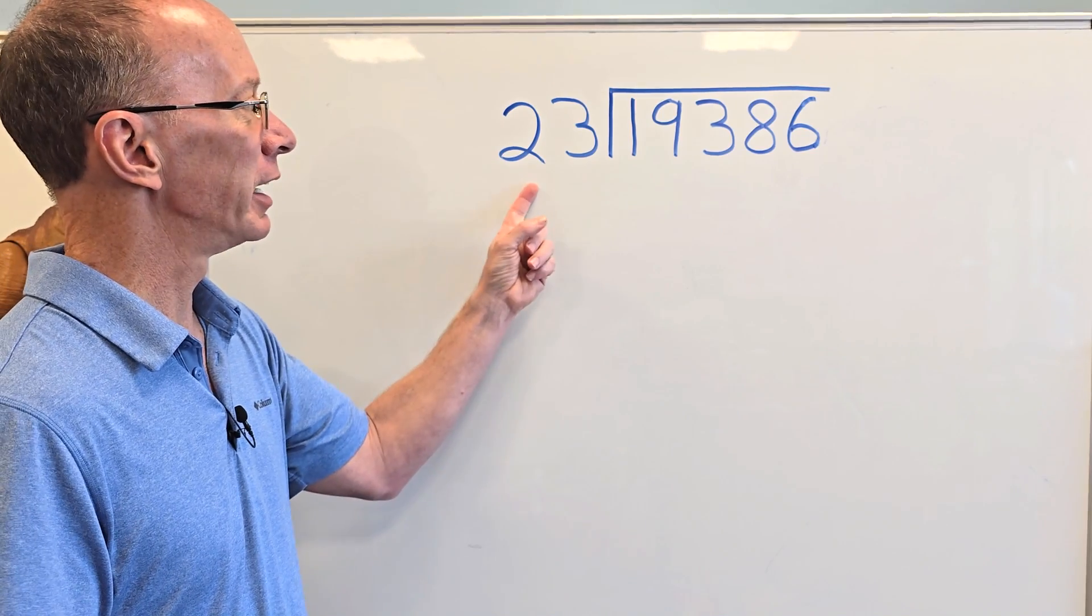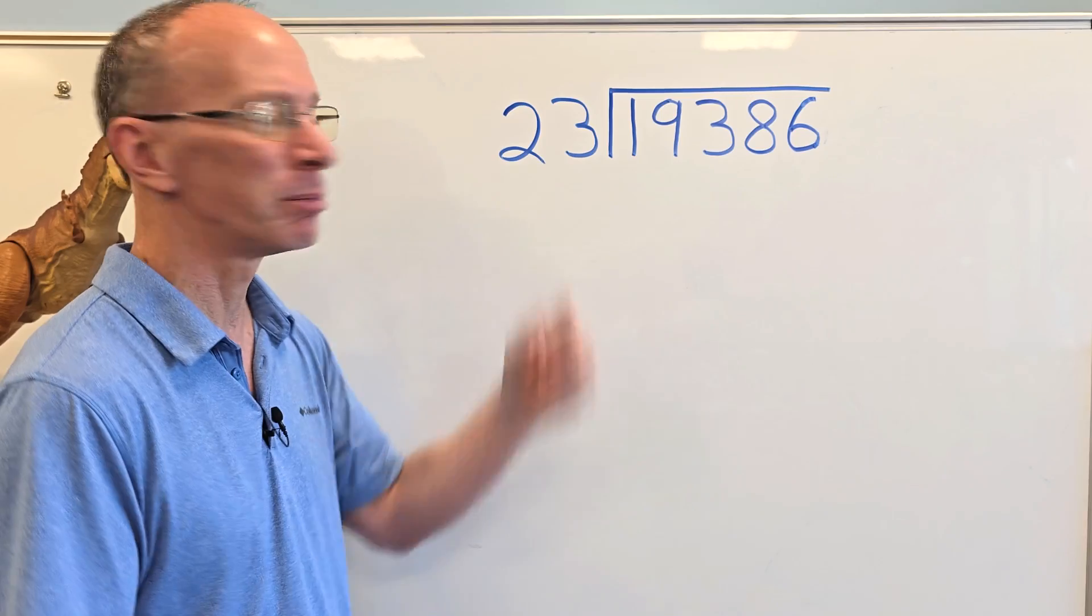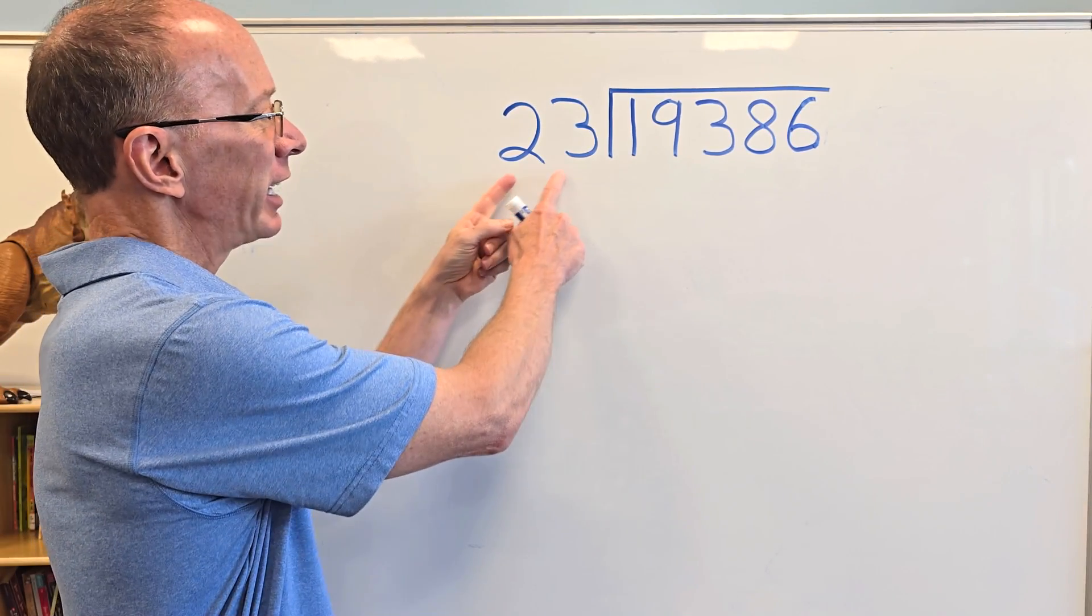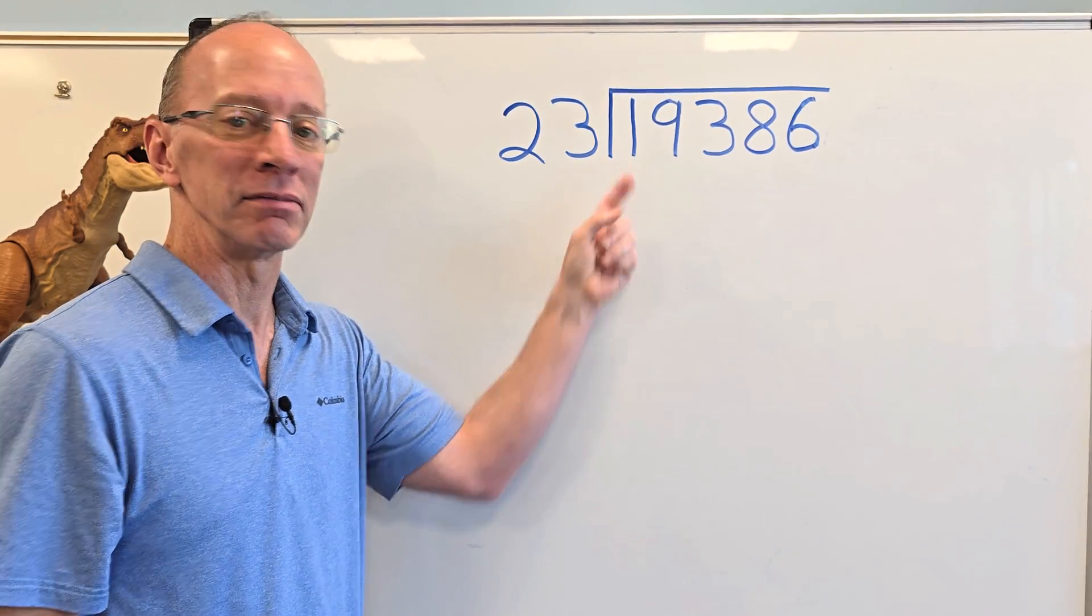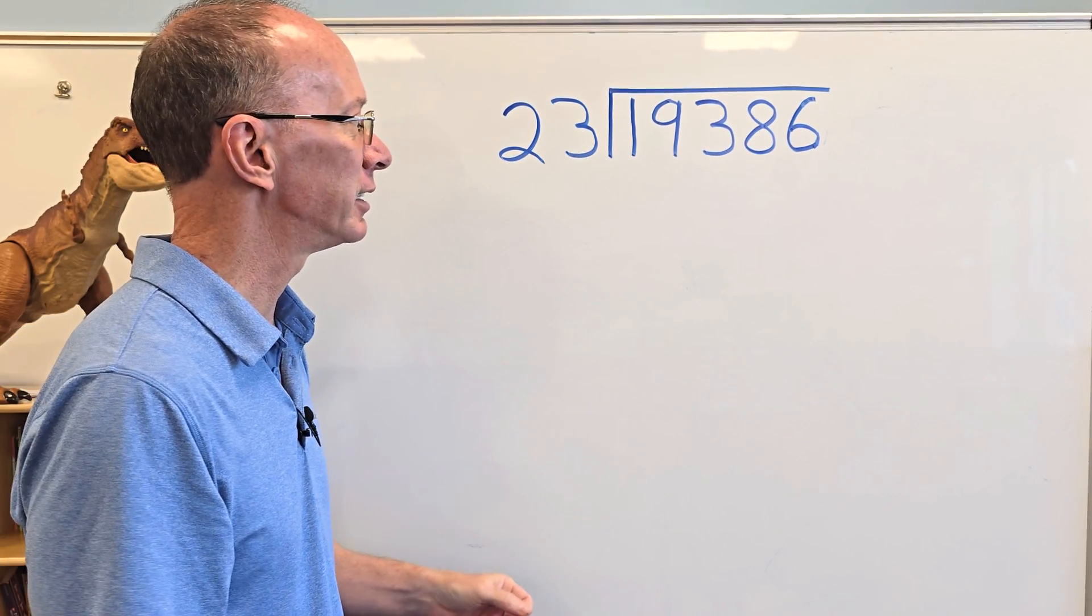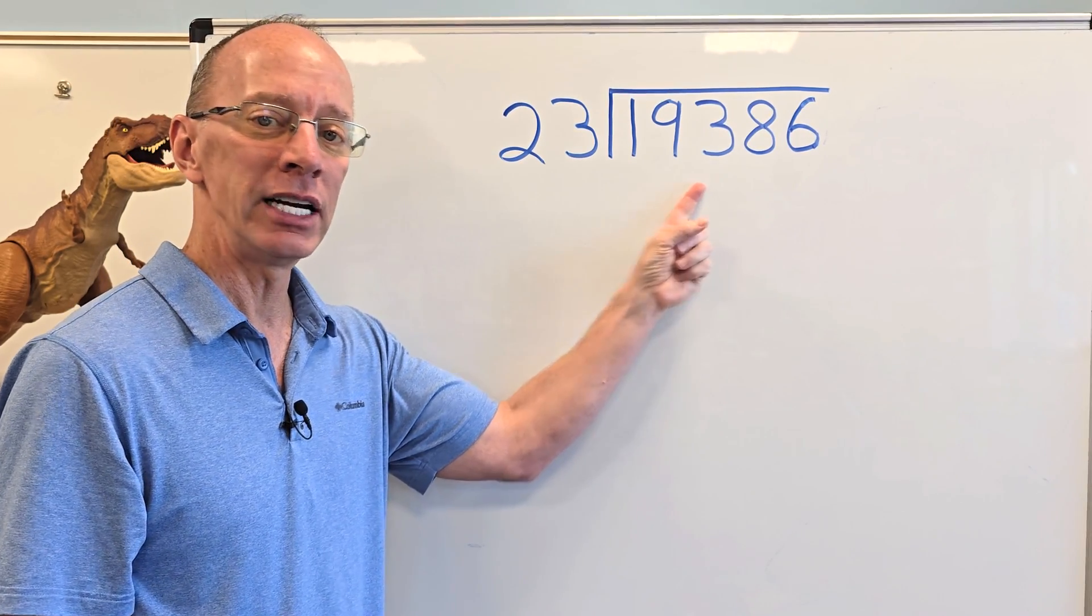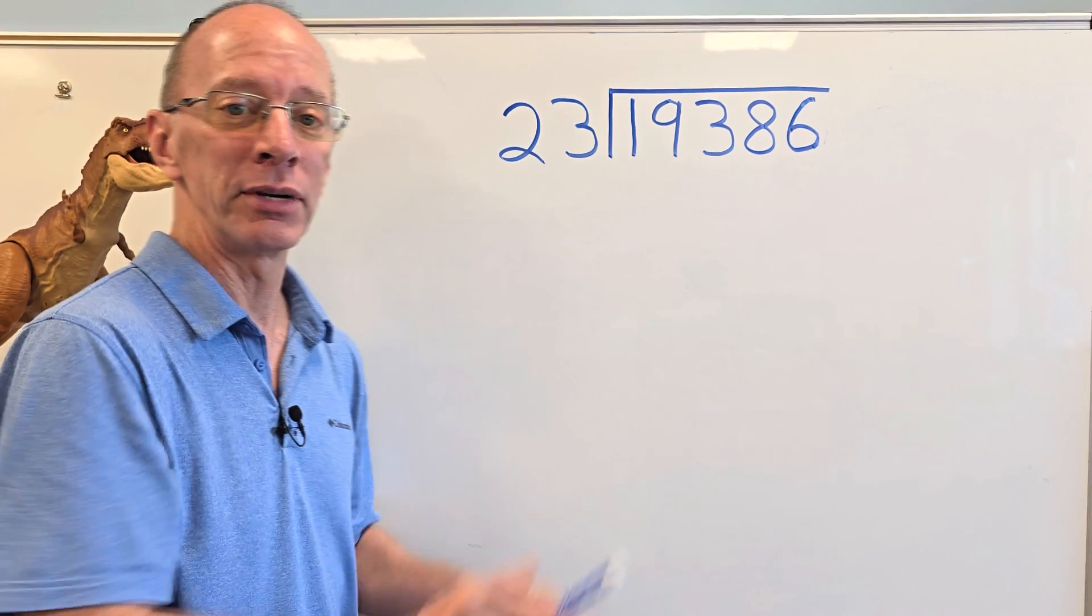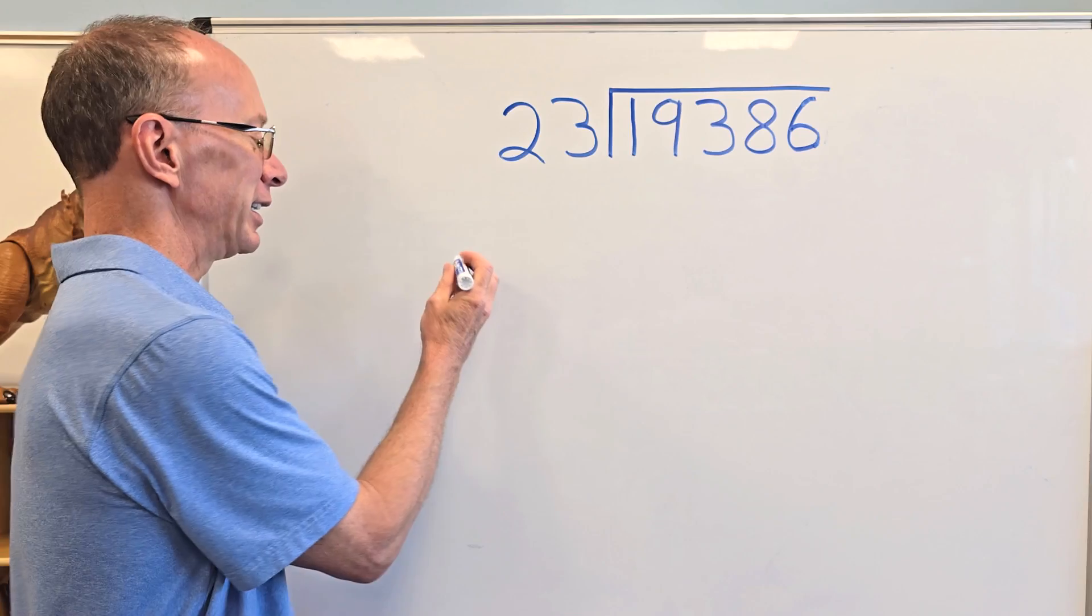Wow, I got a double digit right here and I have 19,386 divided by 23. How do you start? Well, you take 23 and first of all, can I put it into the one? No, you can't. Can I put it into 19? I still can't put it into 19. Can I put 23 into 193? You can do that, but I don't know how many 23s you can put in there. So how do you do it? You're going to start doing a little figuring on the side.